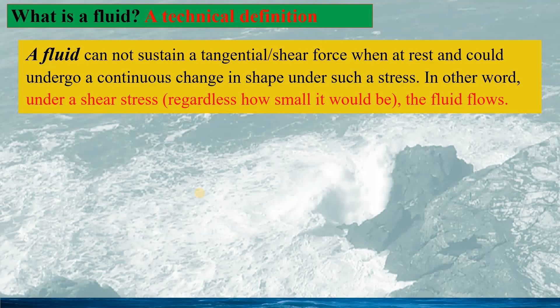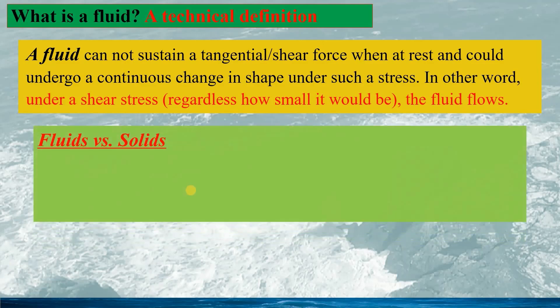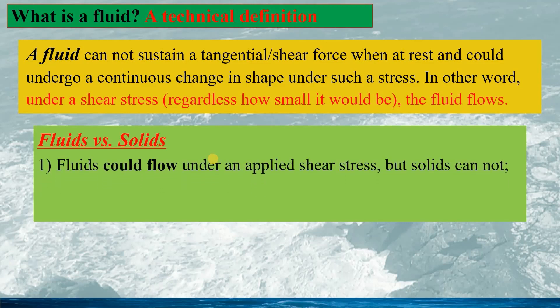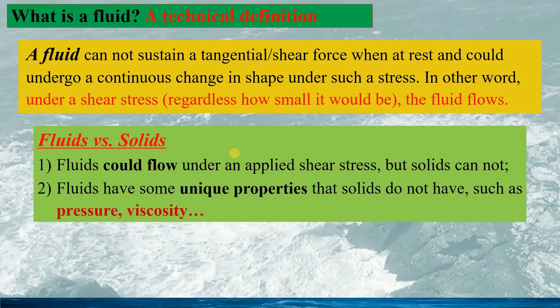Now we look at the technical definition for a fluid. A fluid cannot sustain a tangential or shear force when at rest, and could undergo a continuous change in shape under such stress. In other words, under shear stress, regardless of how small it would be, the fluid would flow. Based on this definition, we can see the difference between fluids and solids: fluids can flow under an applied shear stress, but solids cannot. Fluids also have unique properties that solids do not have, such as pressure and viscosity.